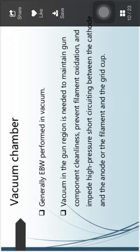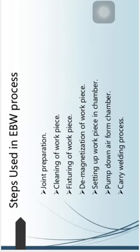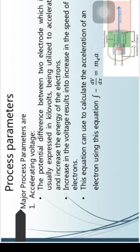The electron beam welding is generally performed in a vacuum chamber. Vacuum in the gun region is needed to maintain gun component cleanliness, prevent filament oxidation, and prevent high-pressure short circuiting between cathode and anode or the filament and grid cup. The steps of the process are: joint preparation, cleaning of work pieces, fixturing, demagnetization, setting work pieces in the vacuum chamber, closing the chamber, pumping down from the chamber, and then carrying out the welding process.